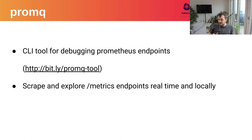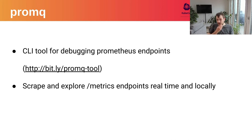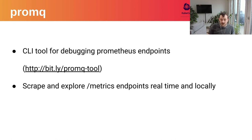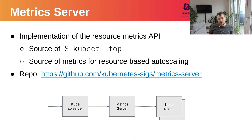Promq might be our most recent addition — started by Han and Solly and a couple of other Googlers. Essentially it's Prometheus but within your terminal, which is a really neat idea to explore slash-metrics endpoints in real time locally. You can query things immediately from your command line without requiring an entire Prometheus setup. It's really a fantastic tool for understanding the metrics available from a process, and it's not specific to Kubernetes at all — it's totally general purpose.